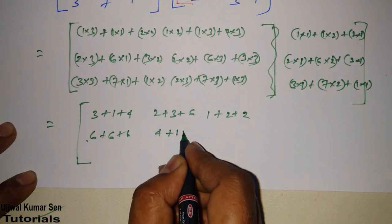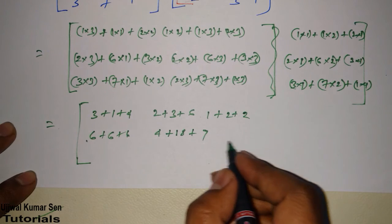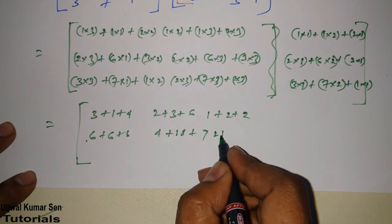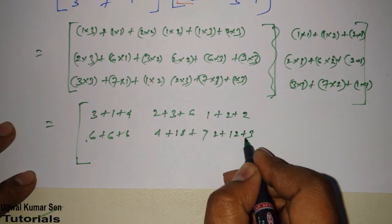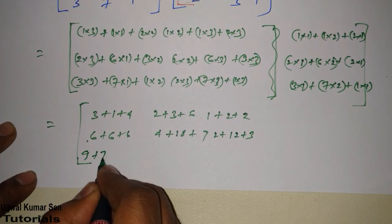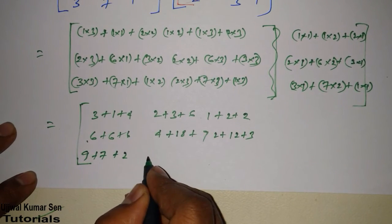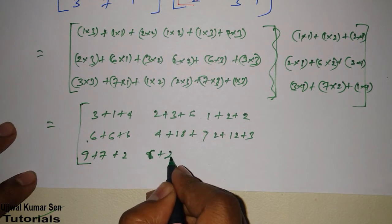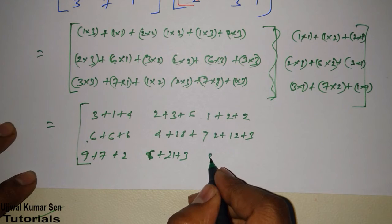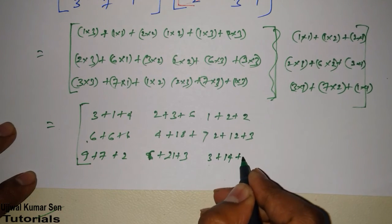4 plus 18 plus 9, and here, 2 plus 12 plus 9, and here, 2 plus 12 plus 3, 9 plus 7 plus 2, it's 6, 6 plus 21 plus 3, 3 plus 14 plus 1,